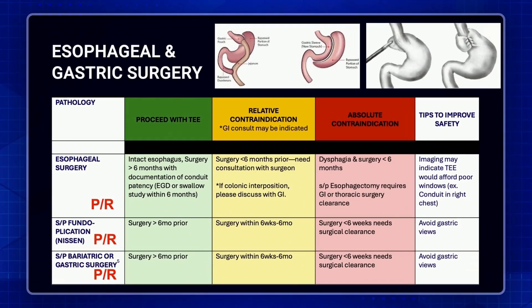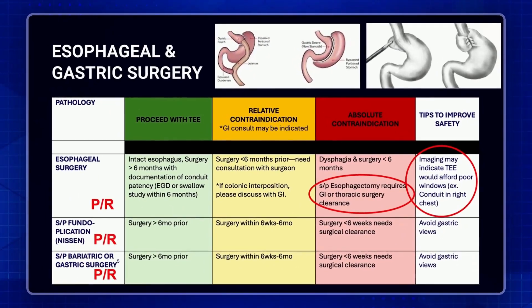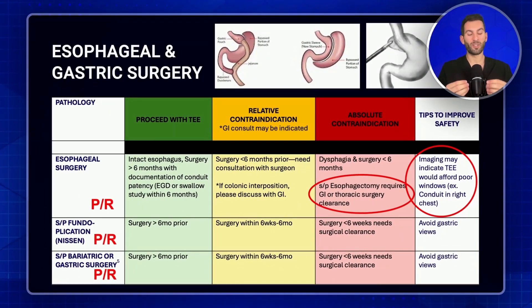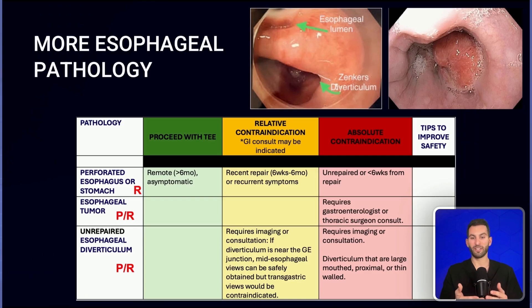Prior surgeries on the stomach or esophagus are all grouped here. Esophagectomy patients are among the highest risk and require clearance from a thoracic surgeon or GI physician. It's also worth noting that prior esophagectomy patients frequently have very poor TEE views, as the conduit may be on the right side of the chest. For prior gastric surgery such as Nissen fundoplication or bariatric surgery, ask whether the esophageal and gastric lumen are patent and whether enough time has passed for adequate healing to reduce perforation risk. Other esophageal pathologies — prior perforation, esophageal tumors, unrepaired diverticulum — are very concerning for patency and tissue integrity, making esophageal rupture easier.